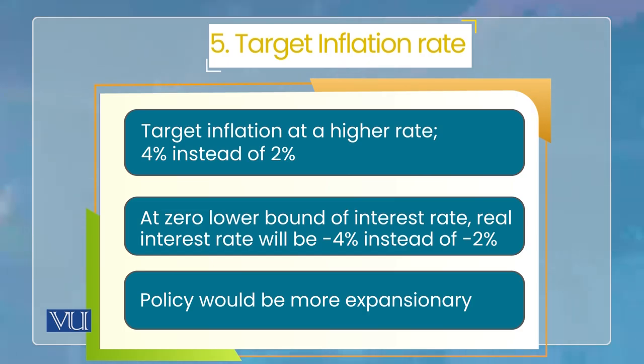तो जो expected real interest rate है वो हो जाएगा minus 2%. और हमने कहा यहाँ पे conventional tools इसलिए fail हो जाते हैं कि interest rate इससे नीचे नहीं जा सकता real interest rate को कम करने के लिए. लेकिन अगर central bank का target ही 4% inflation rate होता, तो real interest rate वो negative 4% हो जाता — 0% nominal interest rate minus 4% expected inflation rate. So the real interest rate would be minus 4%.